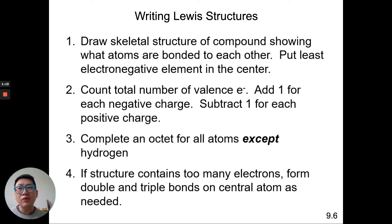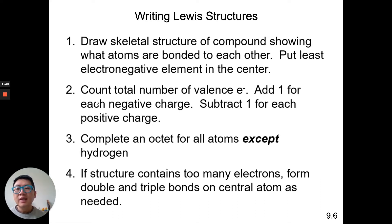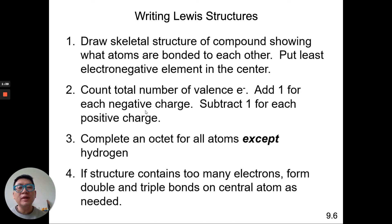For example, in carbon dioxide (CO2), carbon is less electronegative than oxygen, which is why carbon goes in the center surrounded by oxygen. Then we count the total number of valence electrons by looking at what group an element is in on the periodic table. You add one dot for every negative charge and subtract one dot for every positive charge.